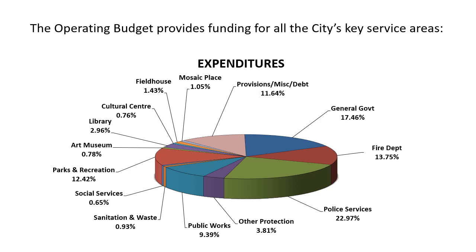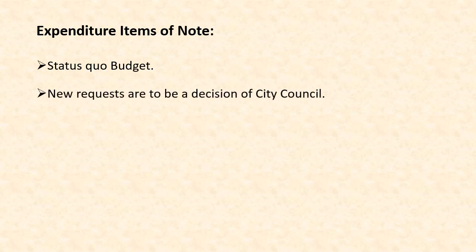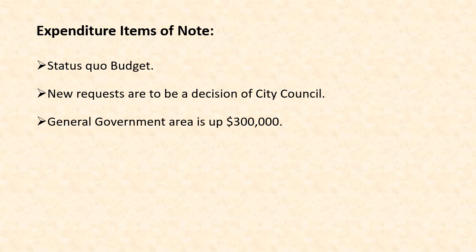Expenditure items of note: again, it's a status quo budget — we're delivering the same programs and services as we did last year. Any new requests are to be a decision of City Council; that's why you see those items on your agenda. I wanted to talk about some specific areas where you'll see increases. Our general government area is up about $300,000. Our City Clerk Solicitor area is up about $46,000 — the bulk of that is actually just a shifting of expenditures between business units, as previously all of our memberships were in another business unit and they've now shifted to the City Clerk Solicitor area.